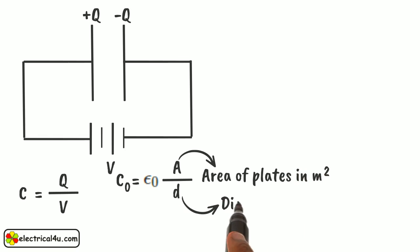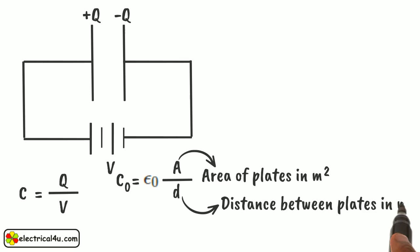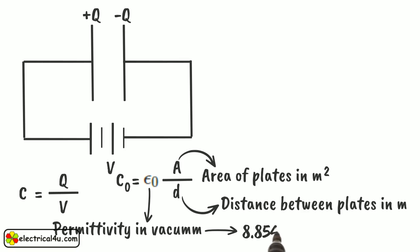D is the distance between the plates in meter. Epsilon_0 is the permittivity of the vacuum, and its value is 8.854 into 10 to the power minus 12 farad per meter.